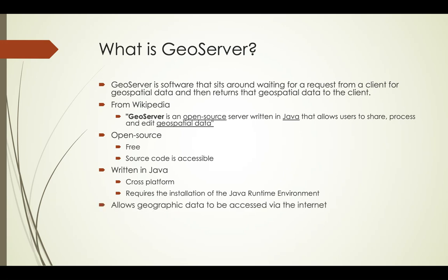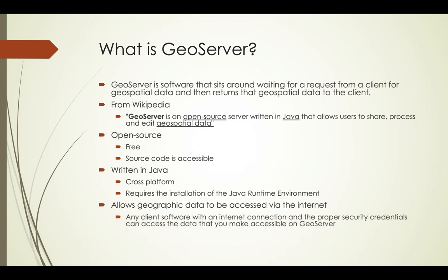The last part of the Wikipedia definition is that it allows users to share, process, and edit geospatial data — and I would add: over a network connection. Any client software with an internet connection and the proper security credentials can access the data that you make accessible on GeoServer. It allows access to the data that you make accessible, but you always have the choice of what you make available, how you make it available, and who has access to it.